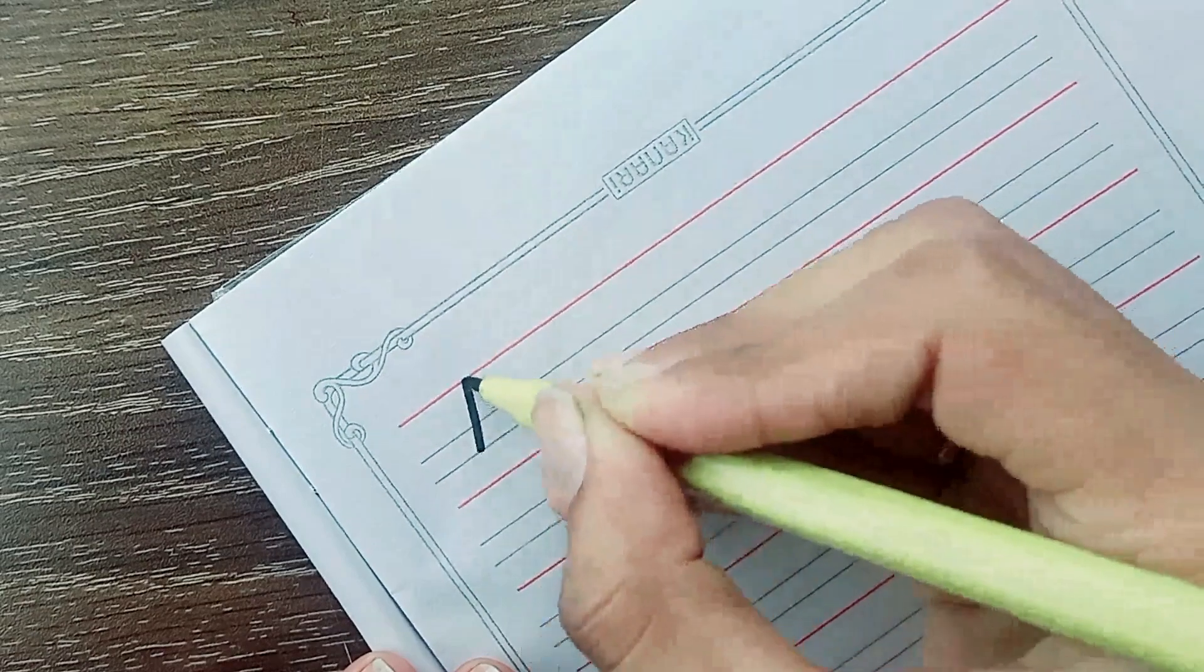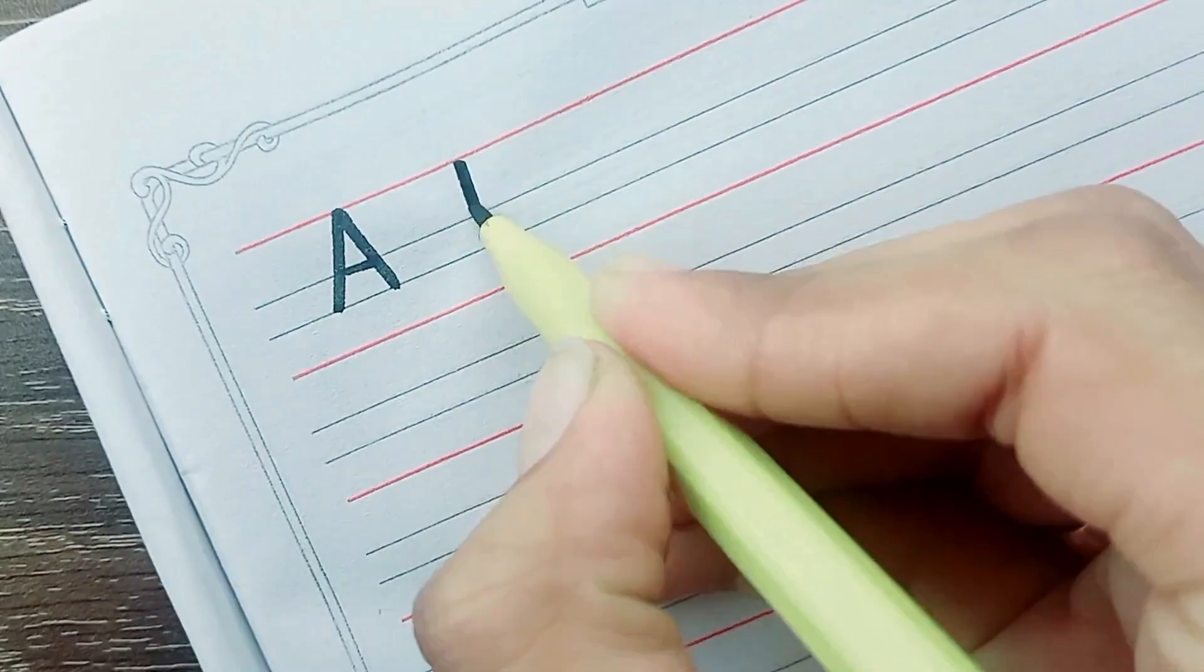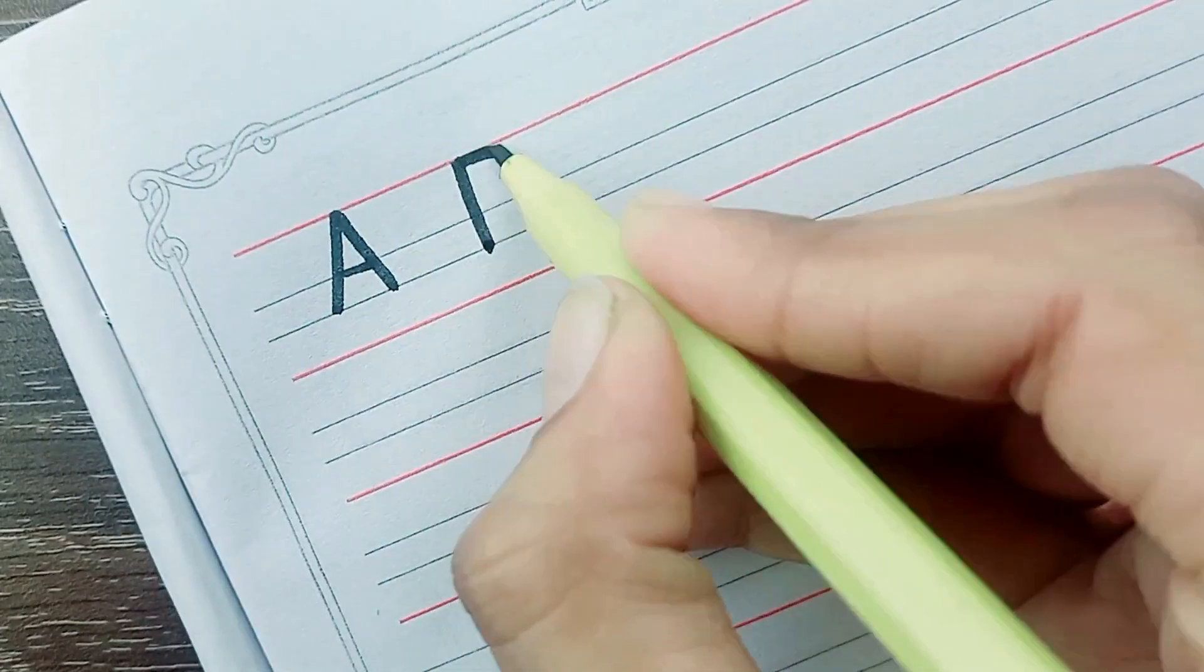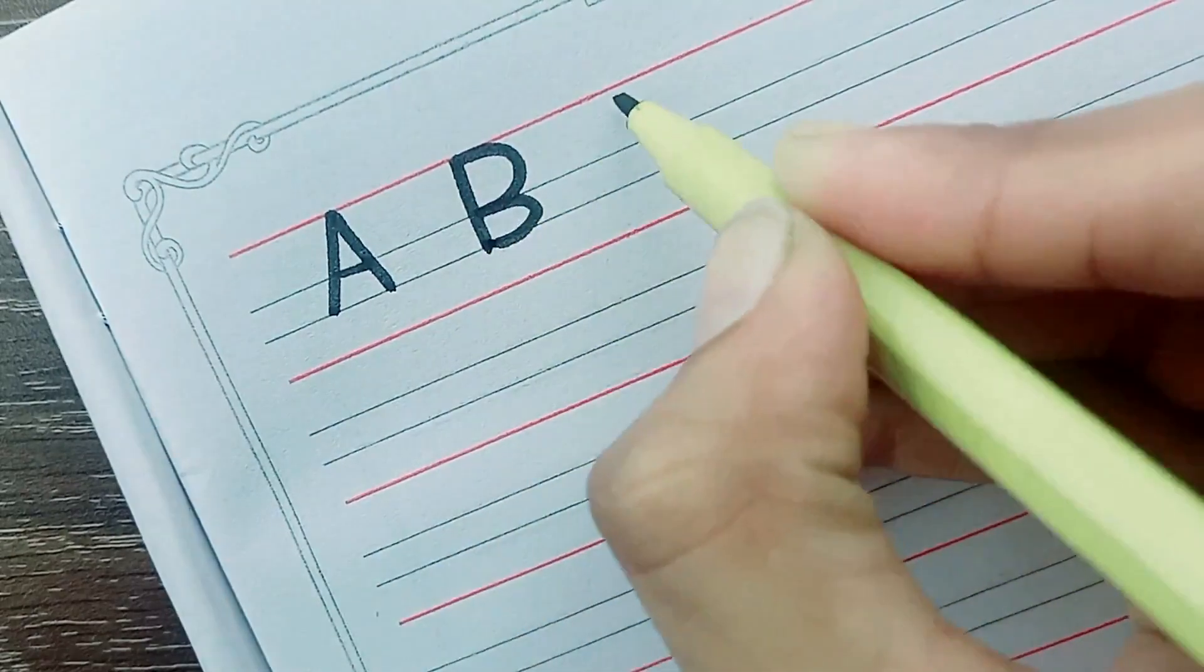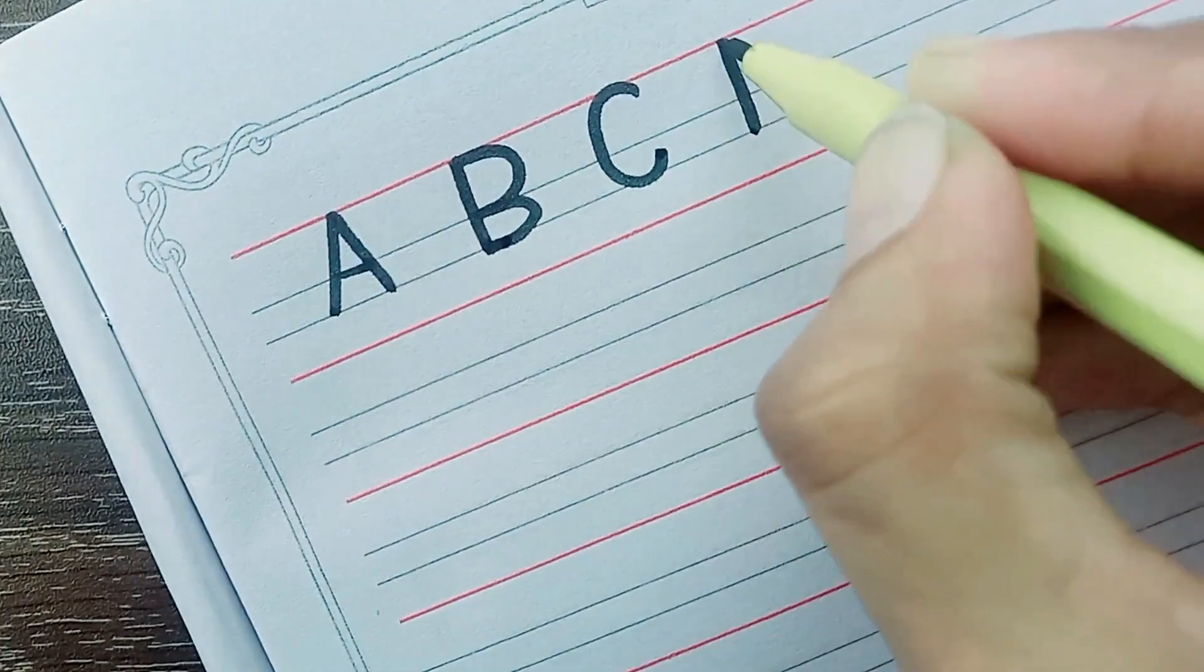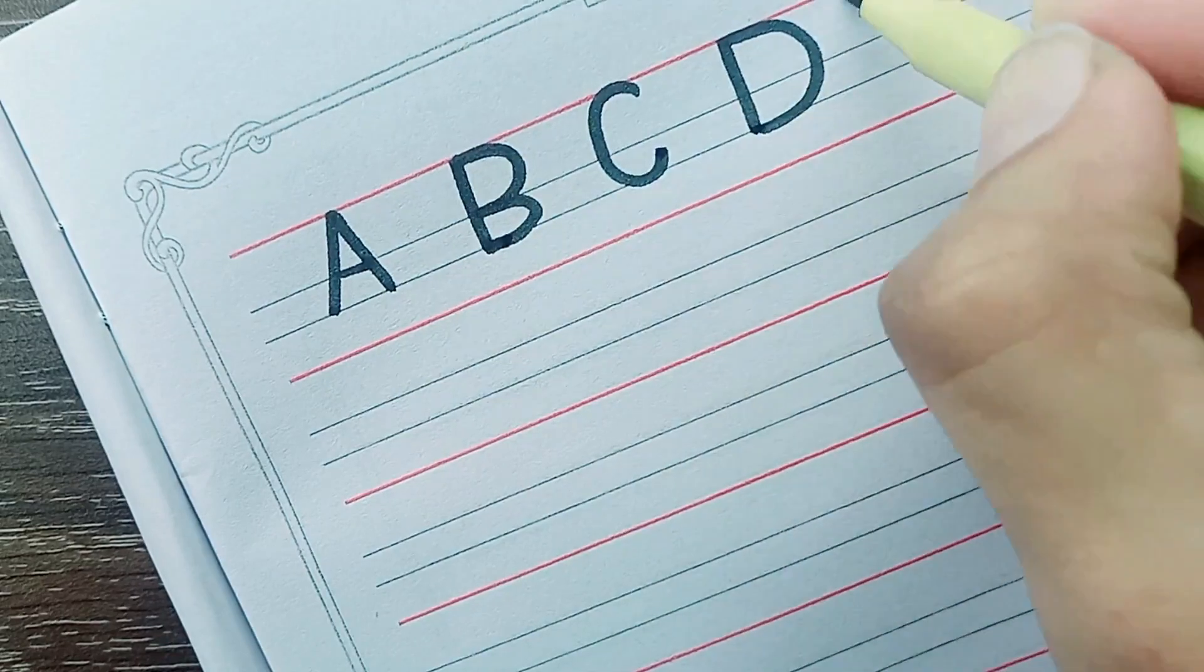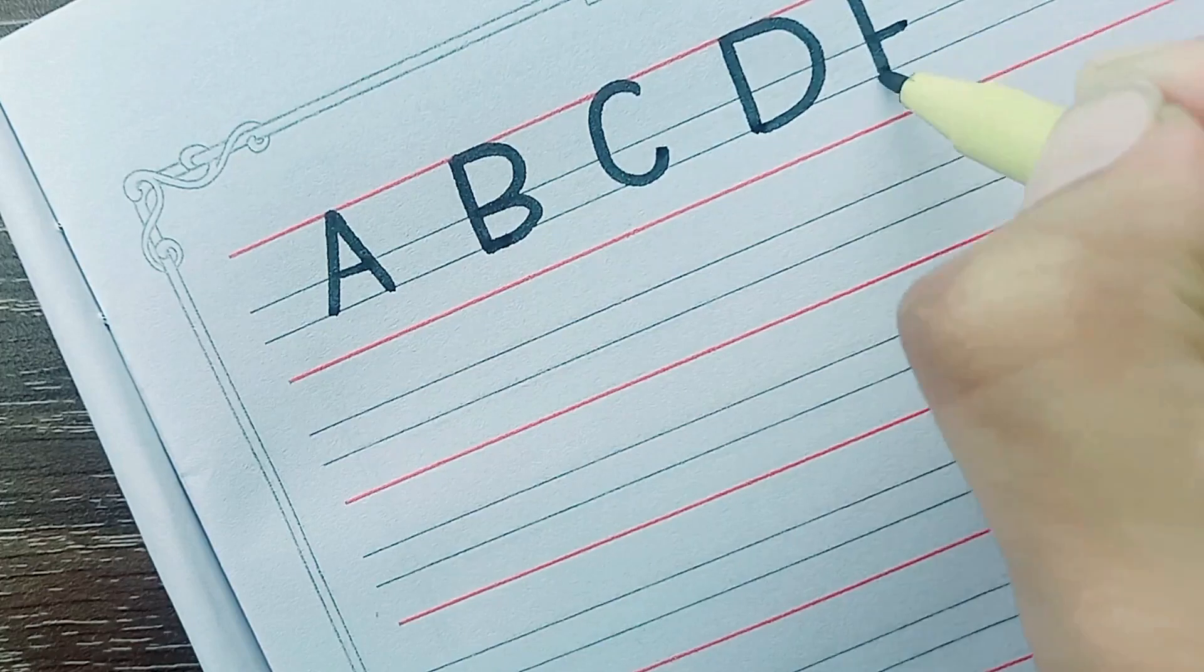A. A for apple. B. B for bed. C. C for cup. D. D for deer. E. E for egg.